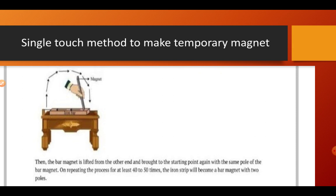The single touch method to make a temporary magnet: take an iron bar and a bar magnet and keep them on a table or stand. The bar magnet is lifted from the other end and brought back to the starting point with the same pole. Repeating this process for at least 40 to 50 times, the iron strip will become a bar magnet with two poles, but it will be a temporary magnet and will not last for a long time.